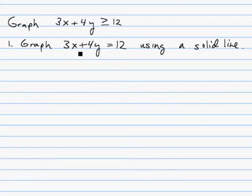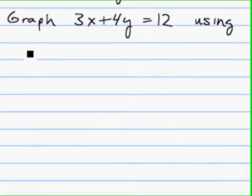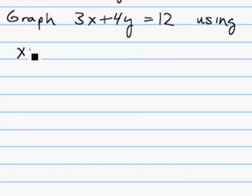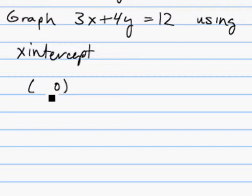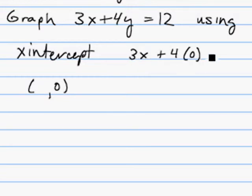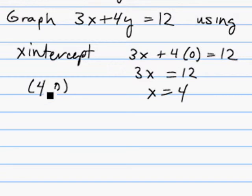To graph this line, the intercept method is probably the easiest. To find the x-intercept, let y be zero and find out what x has to be. So we look at 3x plus 4 times 0 equals 12, giving us 3x equals 12, or x equals 4. So the ordered pair (4, 0) is the x-intercept.